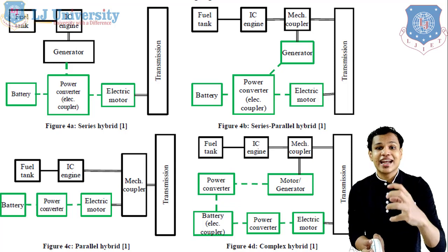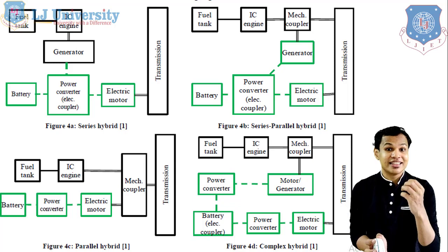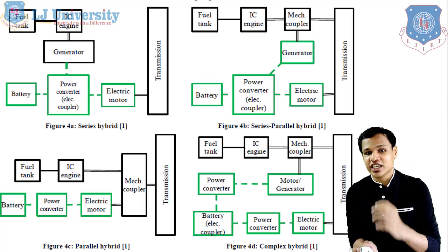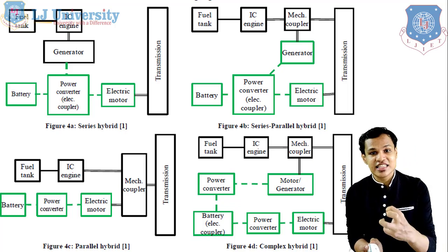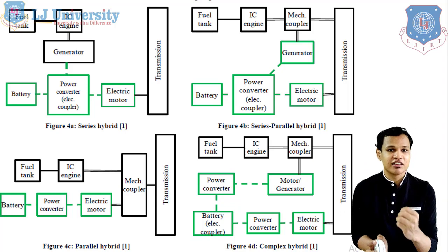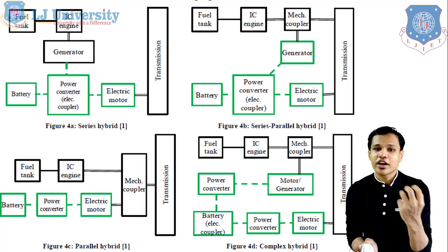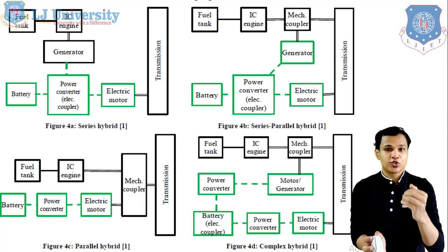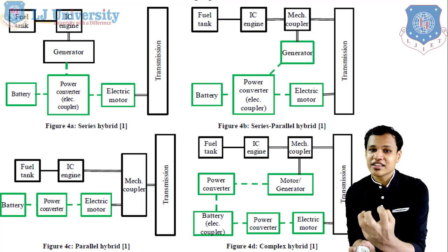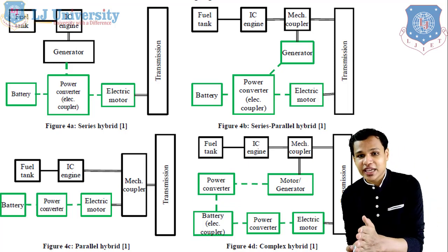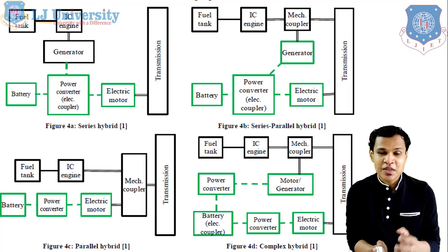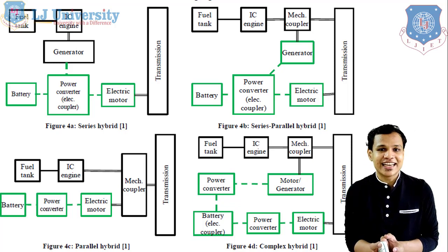In the series topology, according to the name, the components will be connected in one series. You can see here that the power of the IC engine is being transmitted to our electric source with the help of the generator. The IC engine will run the generator, and the power from the generator will be transmitted with the help of the power converter to our electric motor or battery according to the requirement. The engine transmits power as mechanical energy, which is converted into electrical energy by the generator, and that electrical energy is used to run our electric motor.